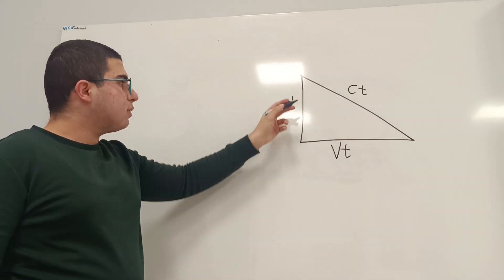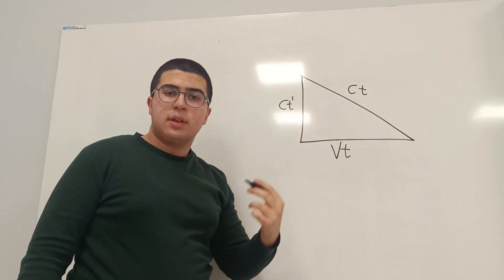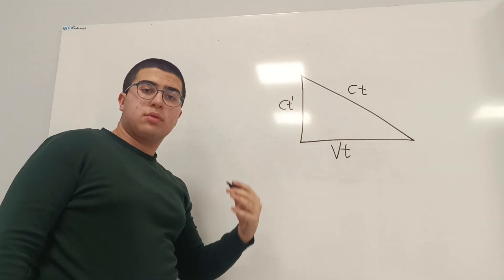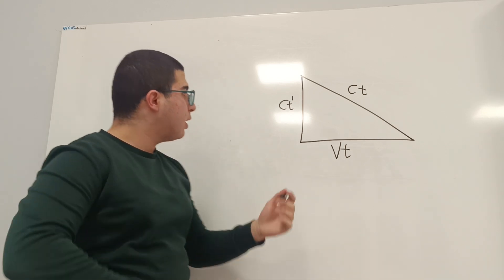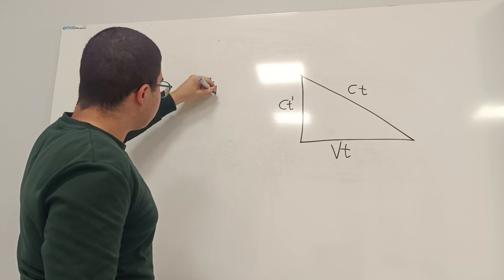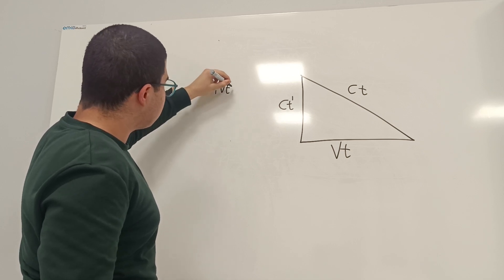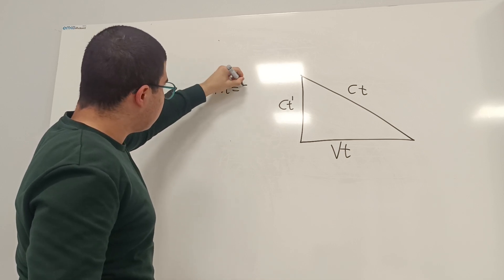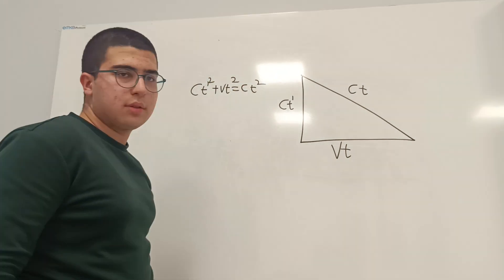So, you see, this is a triangle that was formed by the motion of the photon with respect to you and your friend. Let's find the equation for this triangle. It is c t prime squared plus v t squared equals c t squared.